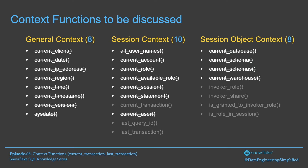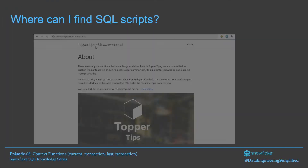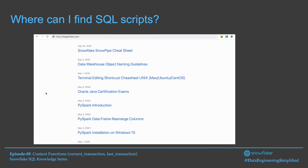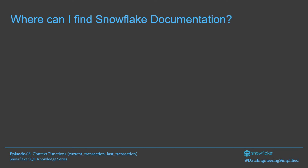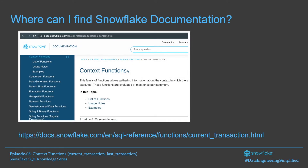Here is the complete list of context functions, and out of these, 19 have already been discussed. In this video, we will primarily focus on two context functions: current_transaction and last_transaction. Both fall under session context. All SQL scripts used in each chapter are available on my website — the link is given below. Snowflake documentation is available at docs.snowflake.com, where all context functions with their references are available.